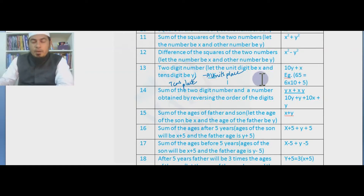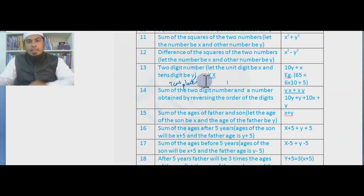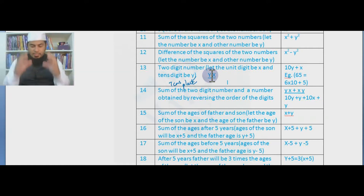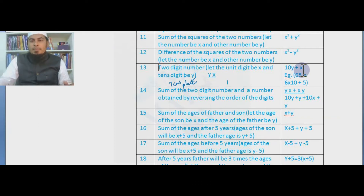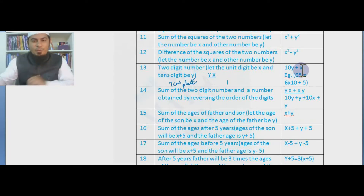Now a very important topic: two-digit number problems. Let the units digit be x and the tens digit be y. This is a two-digit number. When we expand it in algebraic form it becomes 10y + x. For example, take 65: expanded form is 6 × 10 + 5. Here y is the tens place, so 10y + x is just the expanded form of the number, used in word problems.